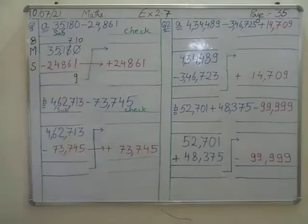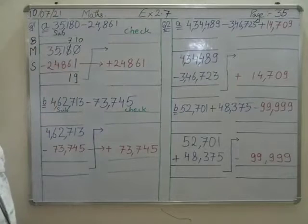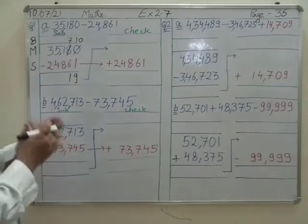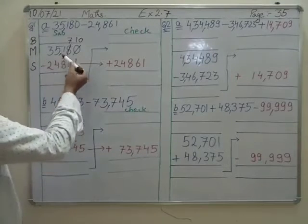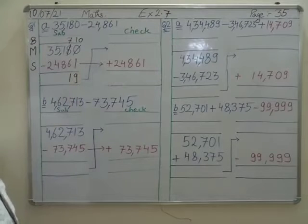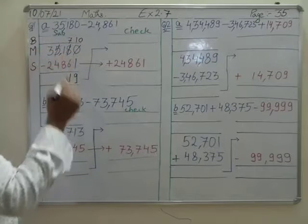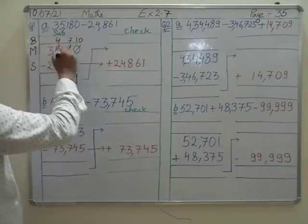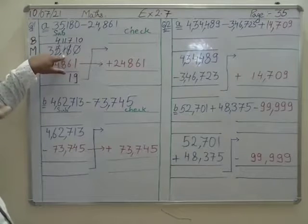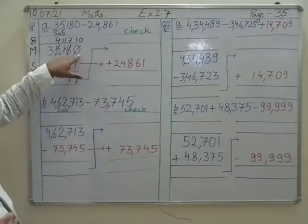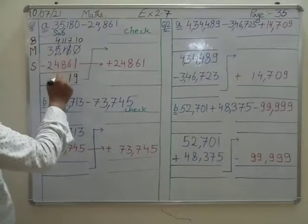Can we subtract 6 from 7? Yes, the answer is 1. Now subtract 8 from 1 — we can't, so we go to 5 and take a borrow. 5 becomes 4, and 1 becomes 11. Some students make the mistake of making 1 into 10 — you must make 0 into 10, and 1 into 11. So 11 minus 8 is 3.